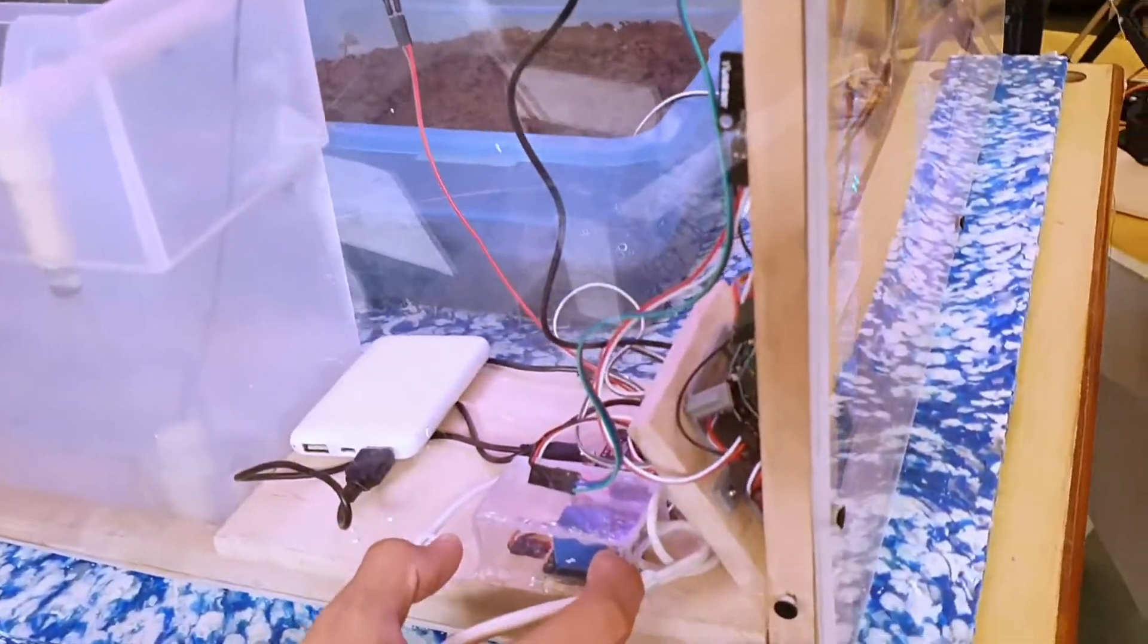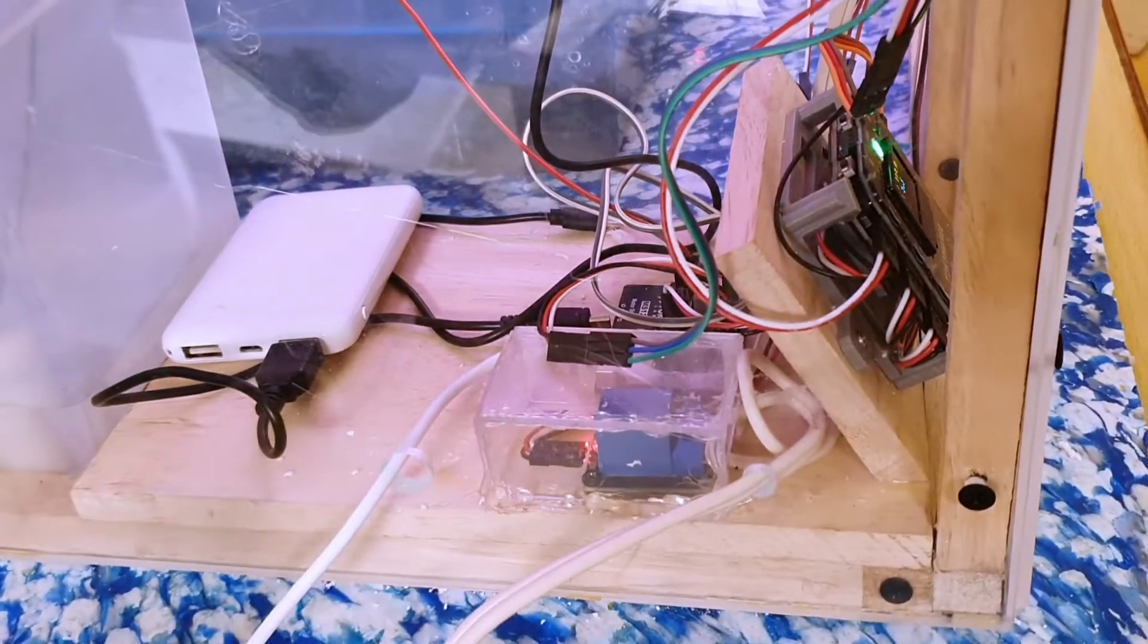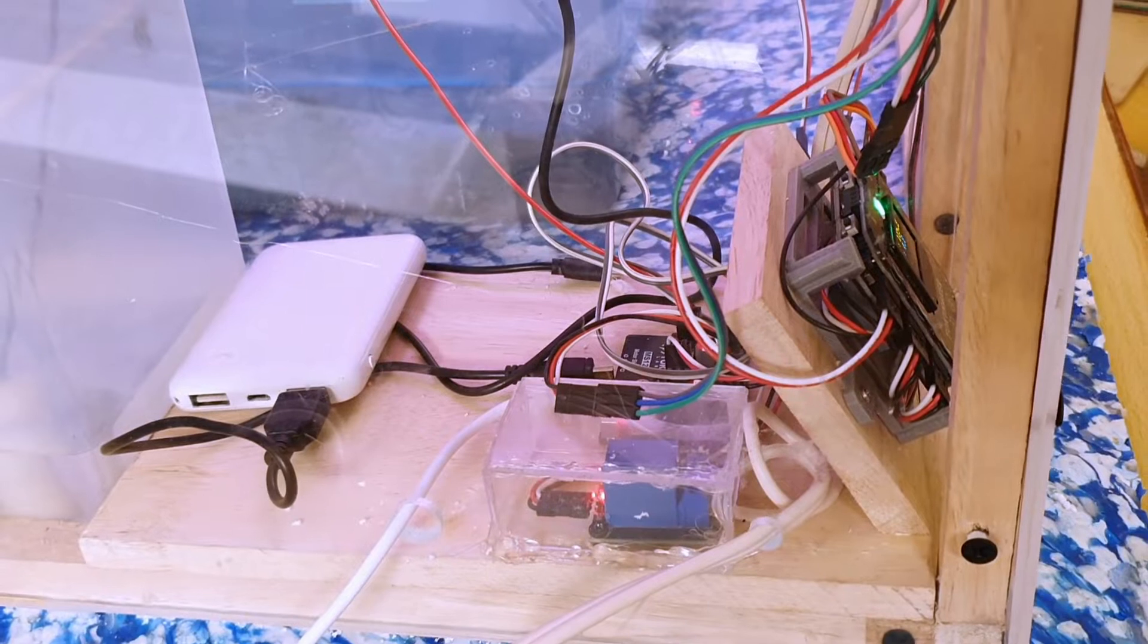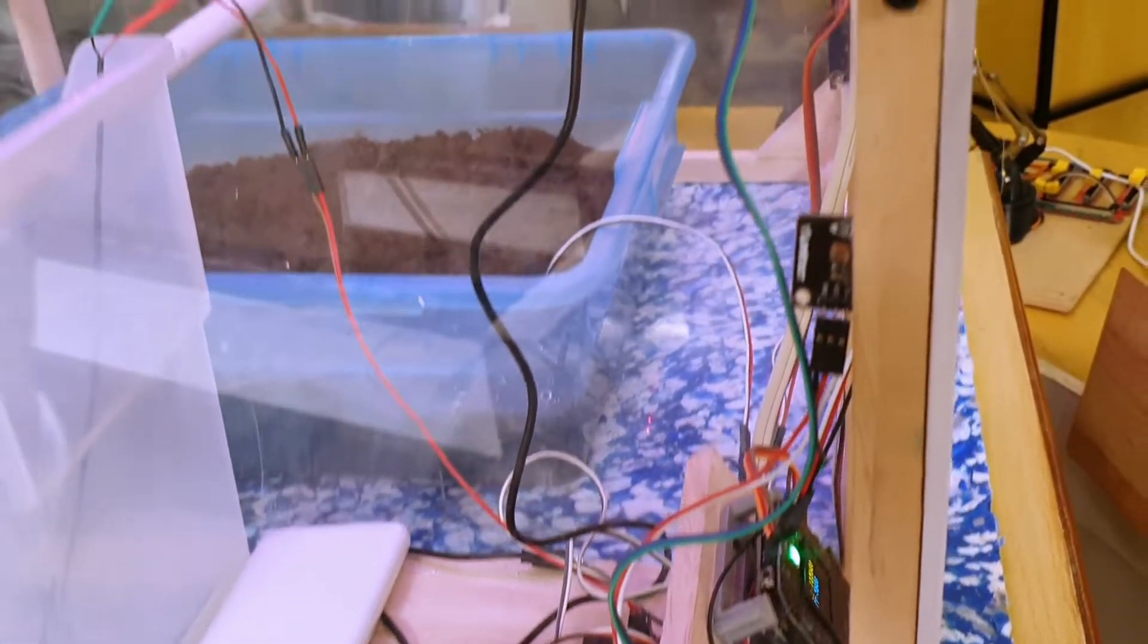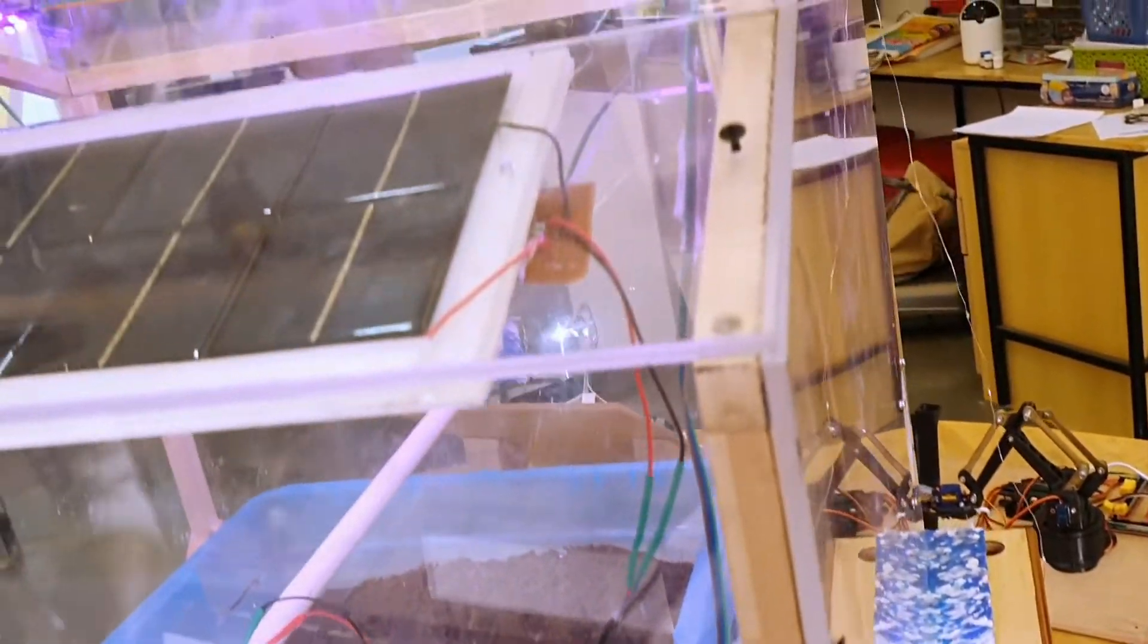This is a relay which is used to turn on the electric bulb that we are going to use in the greenhouse to maintain the temperature. If it is too cold we can turn on the bulb and maintain the temperature.